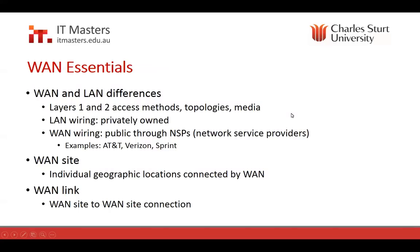The main differences are the layer one and two access methods — how information gets transmitted and encoded across a WAN is very different to a LAN. The topologies are a little different in implementation, but the overall idea is pretty much the same. The media — the type of cabling used between sites — is different simply because a twisted pair cable is not going to cover the same geographical distances as a fiber optic cable or a microwave link, for example.